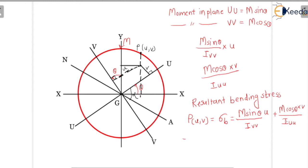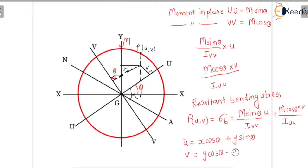In this equation, the signs of u and v determine the nature of the bending stress. If the coordinates of a point with respect to XX and YY axes are known, the coordinates with respect to UU and VV axes are given by: u = x cos theta + y sin theta, and v = y cos theta − x sin theta, where theta is the inclination of the principal axes UU and VV with respect to XX and YY.